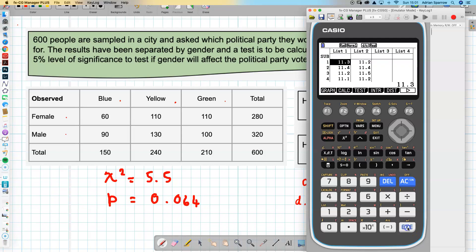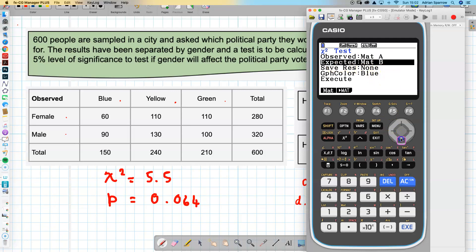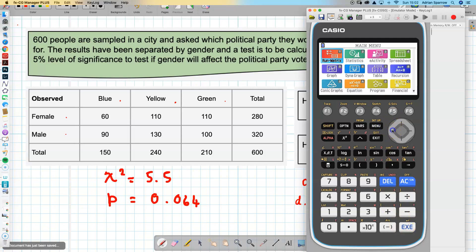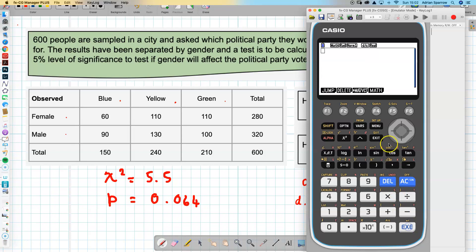If we go back into statistics, we did our test and went to chi-test and then to two-way. It asked us to fill in the matrix A which we did, and it said that it was going to put the expected value in matrix B. If I come out of here and go into the run menu and look at the matrices, I entered these values from the table in a previous video.